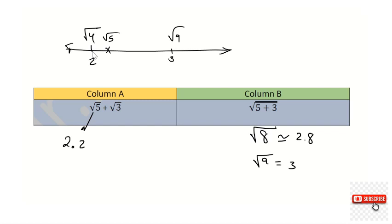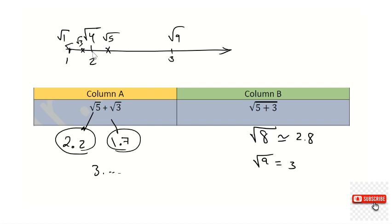Where is root three? Root three is between root one and root four, so root three is approximately 1.7 or 1.8. Adding root five plus root three gives approximately three point something, which is always greater than three. So the right answer is A.